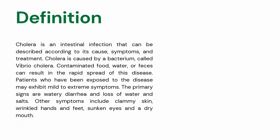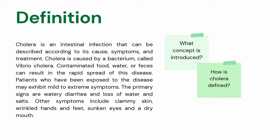Definition: Cholera is an intestinal infection that can be described according to its cause, symptoms, and treatment. Cholera is caused by a bacterium called Vibrio cholerae. Contaminated food, water, or feces can result in the rapid spread of this disease. Patients who have been exposed may exhibit mild to extreme symptoms. The primary signs are watery diarrhea and loss of water and salts. Other symptoms include clammy skin, wrinkled hands and feet, sunken eyes, and a dry mouth. Questions: What concept is introduced? How is cholera defined? And what idea would you like to add about cholera? Pause the video and answer it.